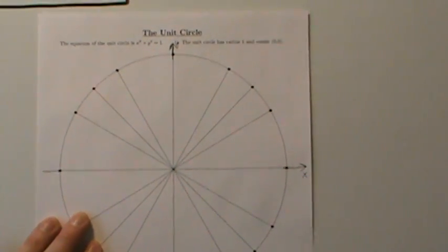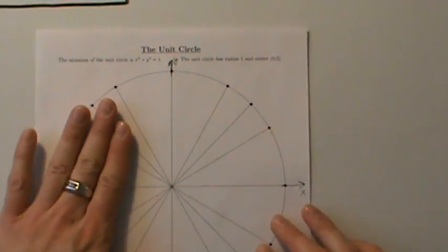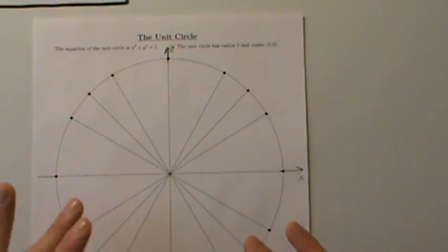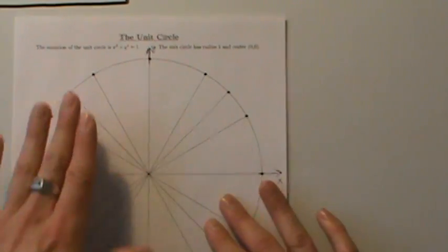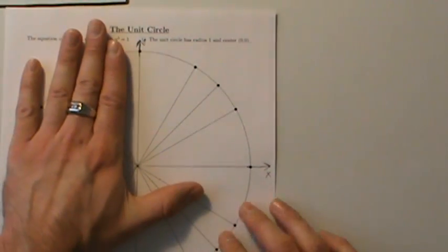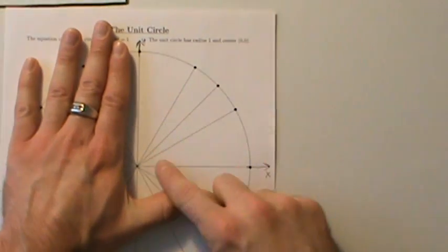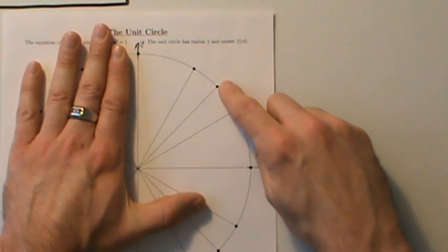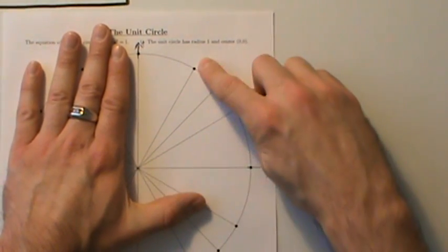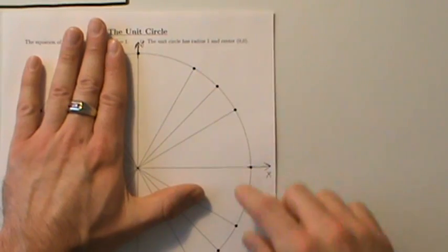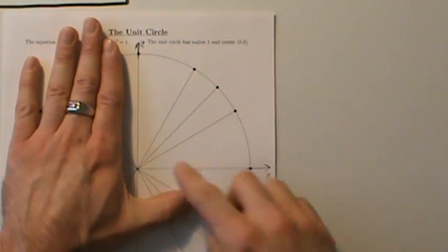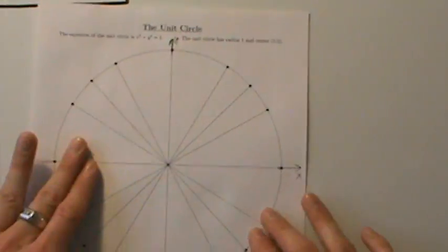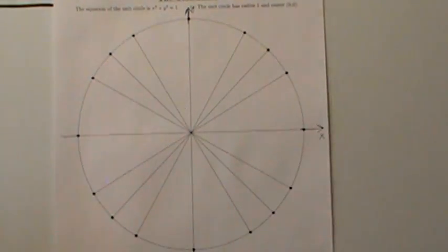The first quadrant is up here — quadrant 1, quadrant 2, quadrant 3, quadrant 4. If you have to fill in a unit circle, it's going to be much easier if you just remember the first quadrant: this angle and its corresponding point, this angle and its corresponding point, and this angle and its corresponding point.